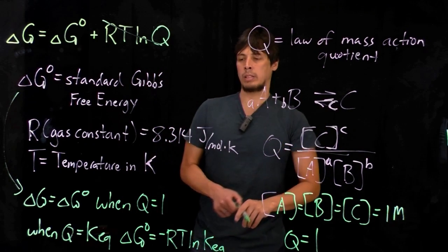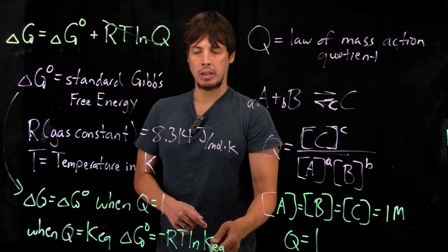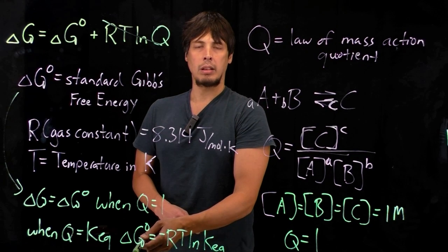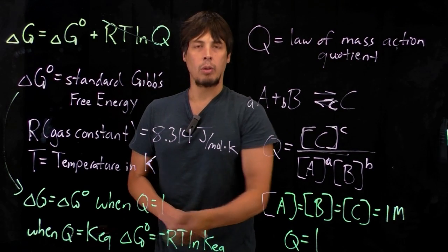When you rearrange this equation, the standard Gibbs free energy is equal to negative RT ln of Keq. And so this suggests that if we know the equilibrium constant, then we can calculate the standard Gibbs free energy, or vice versa.